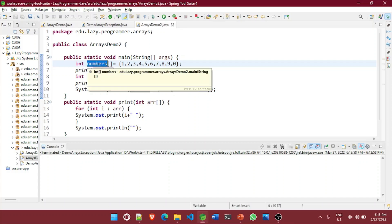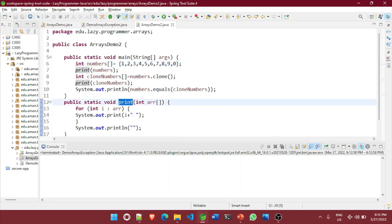So I have this array of numbers where I have stored 10 different numbers. So I have also created one print method to which I am passing my array and printing all the elements of that array. So here using the clone method here on line number eight, I am cloning this specific one D or single dimension array to another variable called clone numbers. So what it will do, it will create a separate object and a separate reference in the memory also.